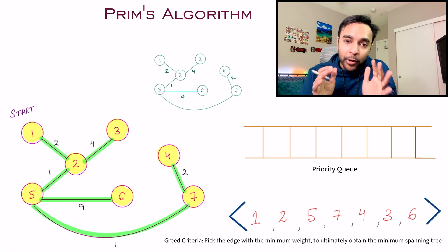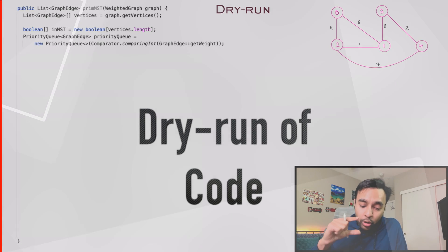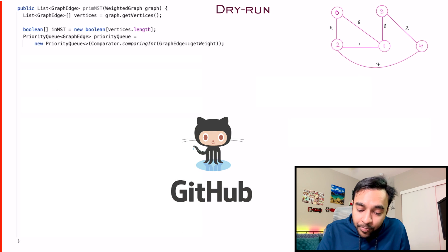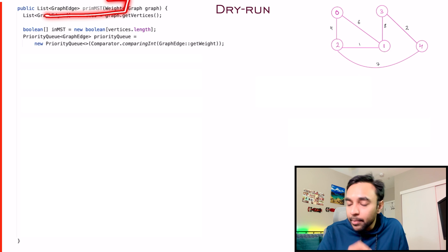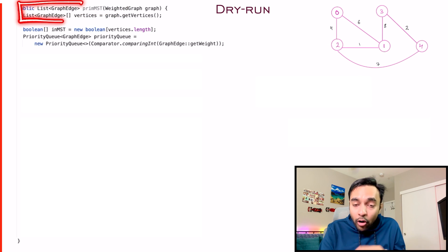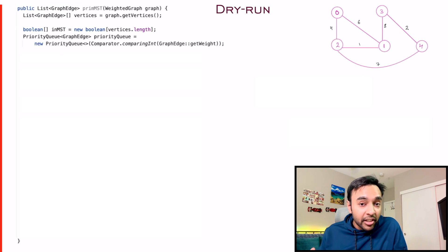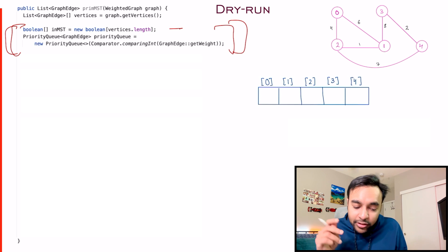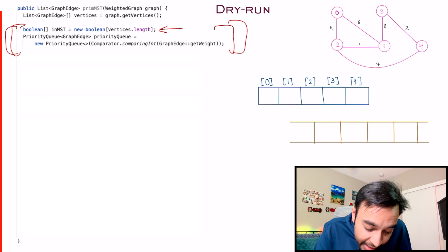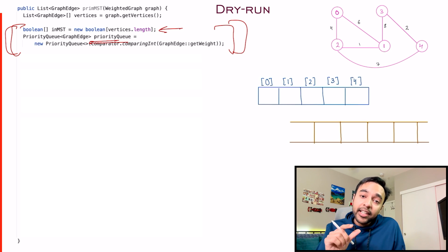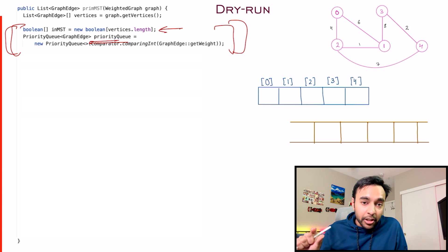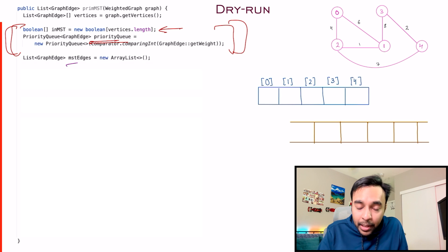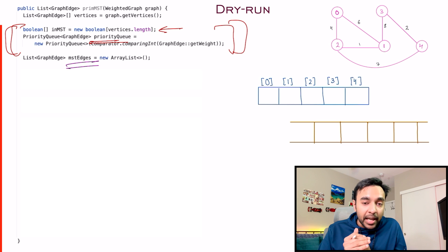Now let us quickly do a dry run of the code and see how it works in action. On the left side of your screen you have the actual code to implement Prim's algorithm, and on the right I have a smaller graph for better understanding. We pass this entire graph as a parameter to the function primmft. This graph is going to return a list of all the edges that complete this minimum spanning tree. The first thing we do is create a set to store all vertices already covered, and next I create a priority queue, and I initialize minimum spanning tree edges — this is going to store my complete minimum spanning tree.